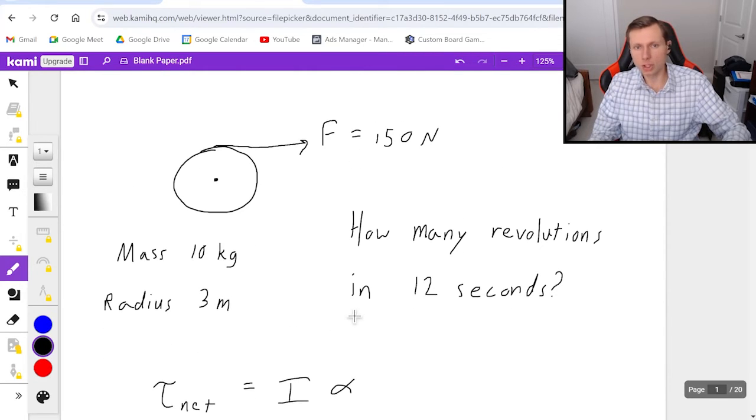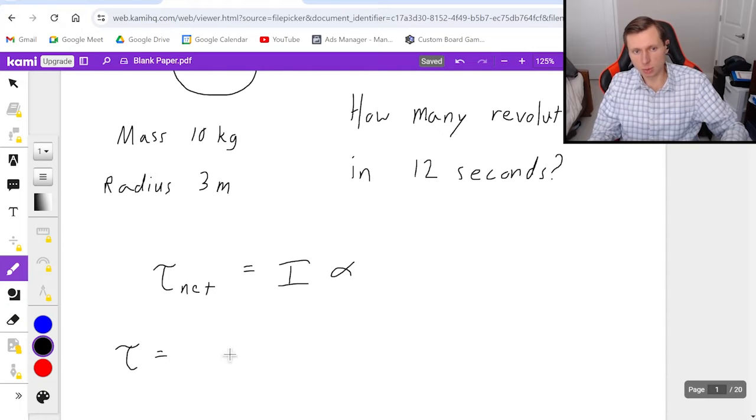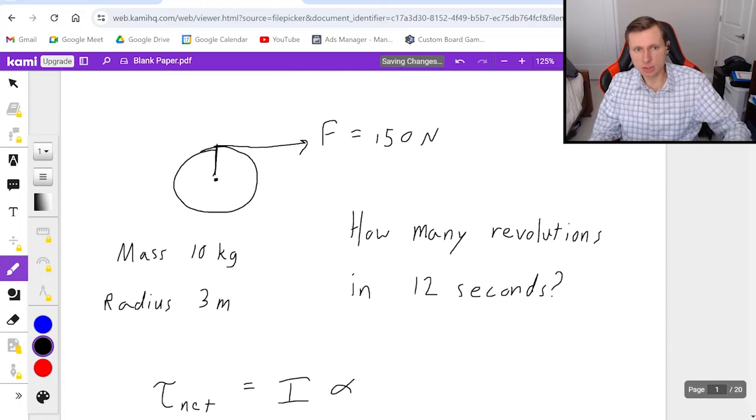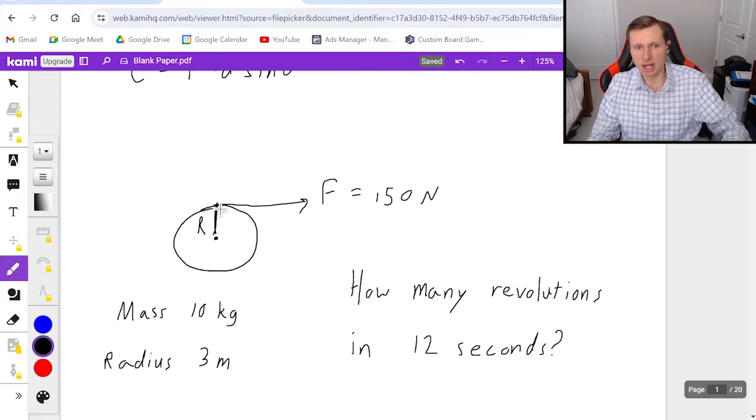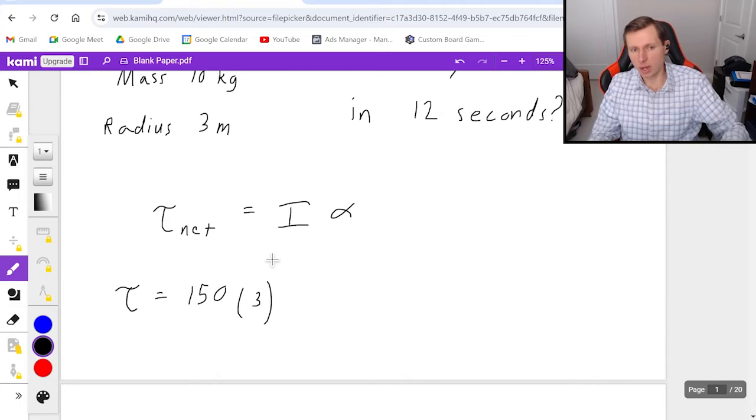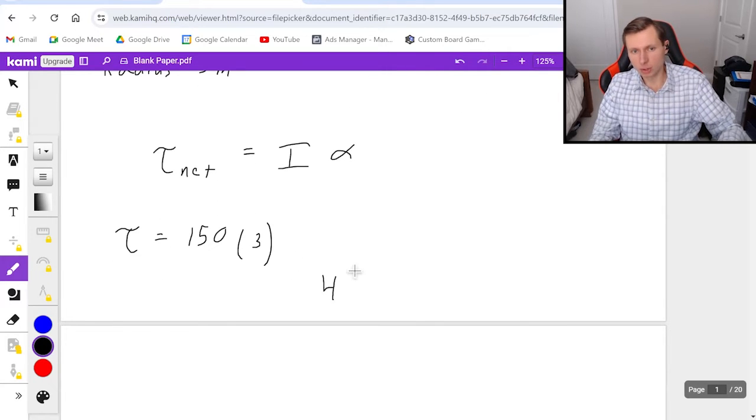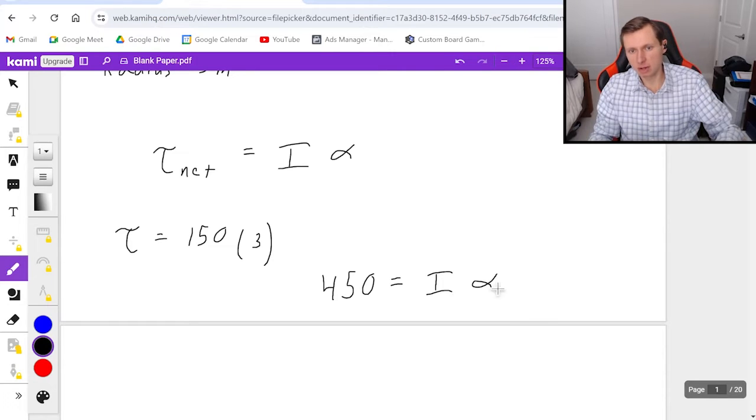There's only one force going on here. It's the 150 newton force pulling the wheel. So that torque is equal to force 150 times the distance. It's this distance right here, which is the radius of the wheel, 3 meters. So the distance is 3. And then sine theta, I don't even need to include, because it is 90 degrees apart. Radius and force are 90 degrees. Sine of 90 is 1. So I don't even need to include that. 150 times 3 is 450. And that's equal to I times alpha.